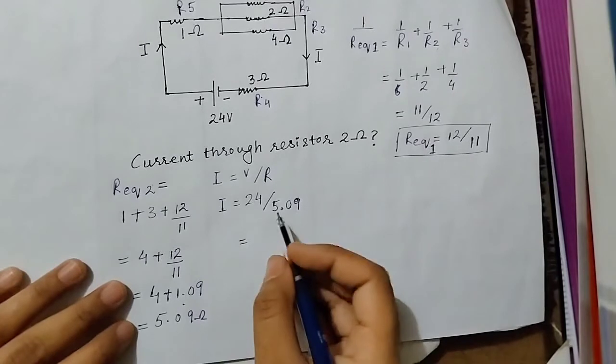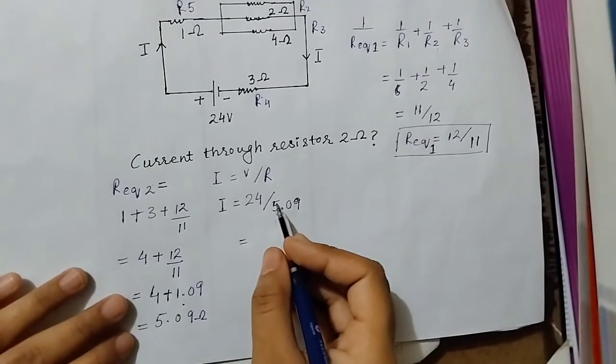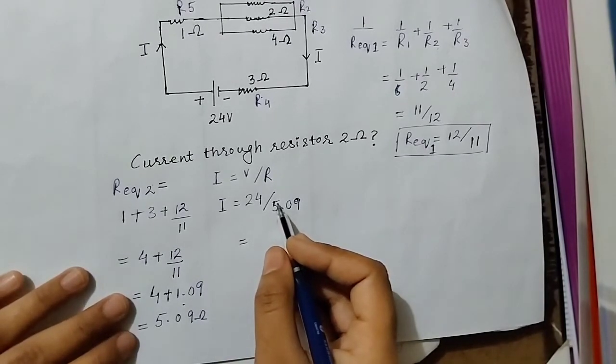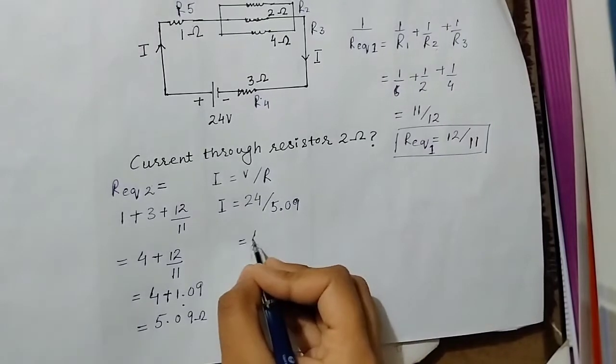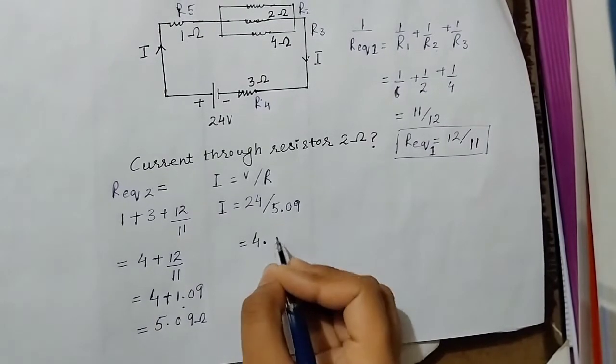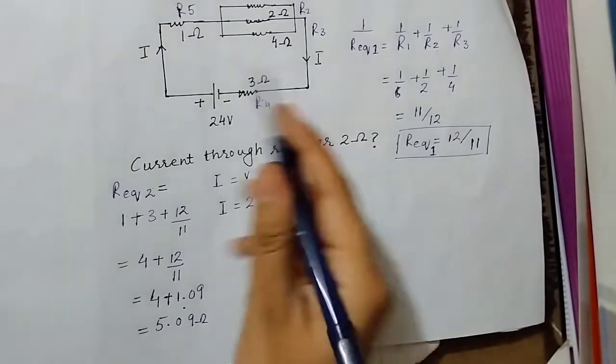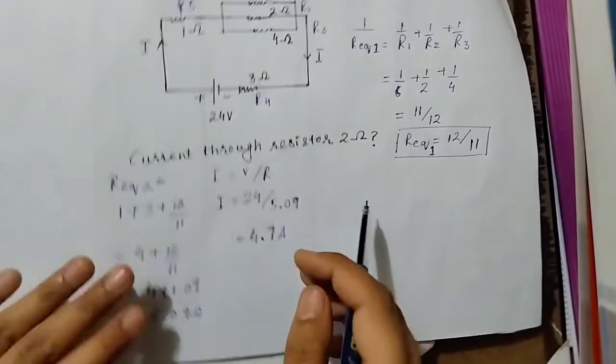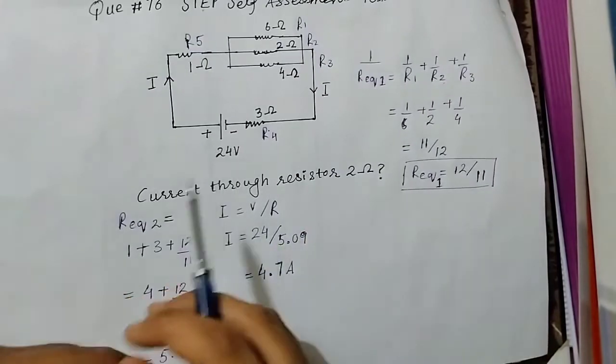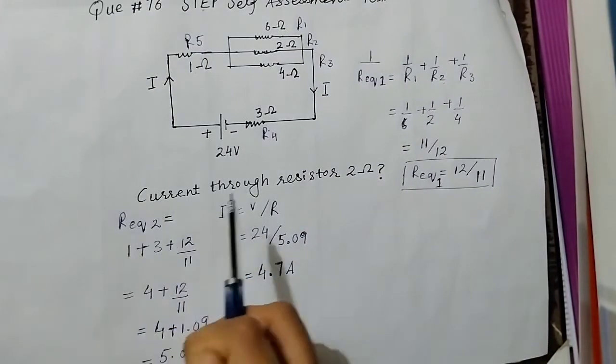So putting in values: voltage is 24 and resistance is 5.09, and if we round off, this is like 4.7 ampere. Now you have to remember that in a parallel combination, voltage is the same.